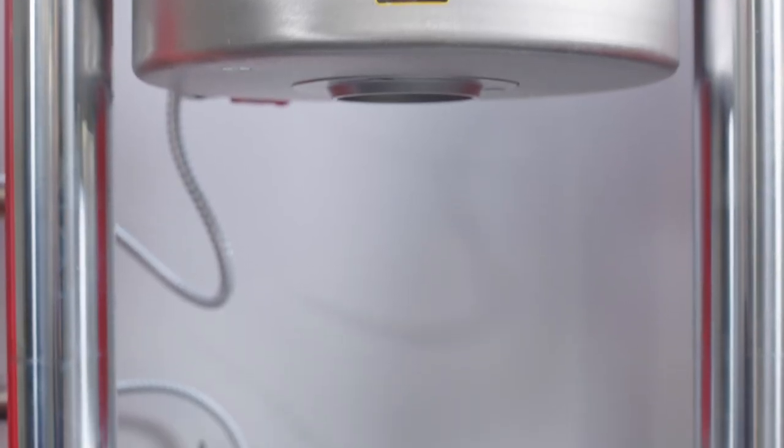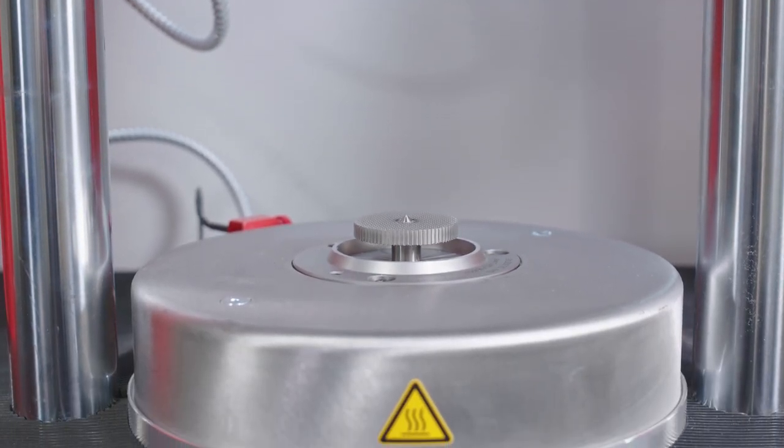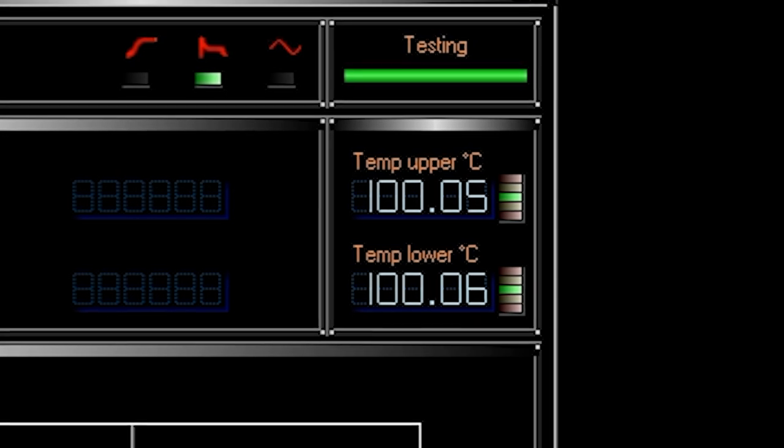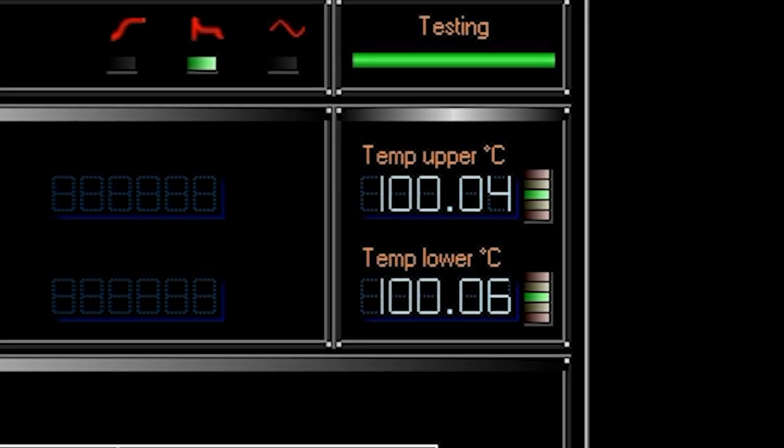The instrument is outfitted with highly precise PT100 resistance thermometers in both the upper and lower dies, allowing the temperature of both dies to be independently controlled and monitored up to 232 degrees Celsius through MonControl software.